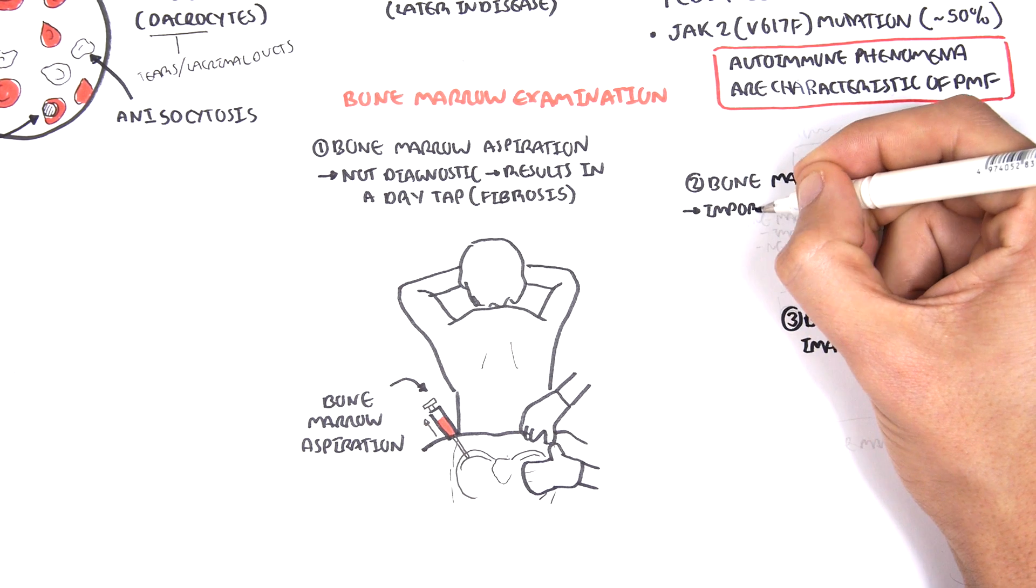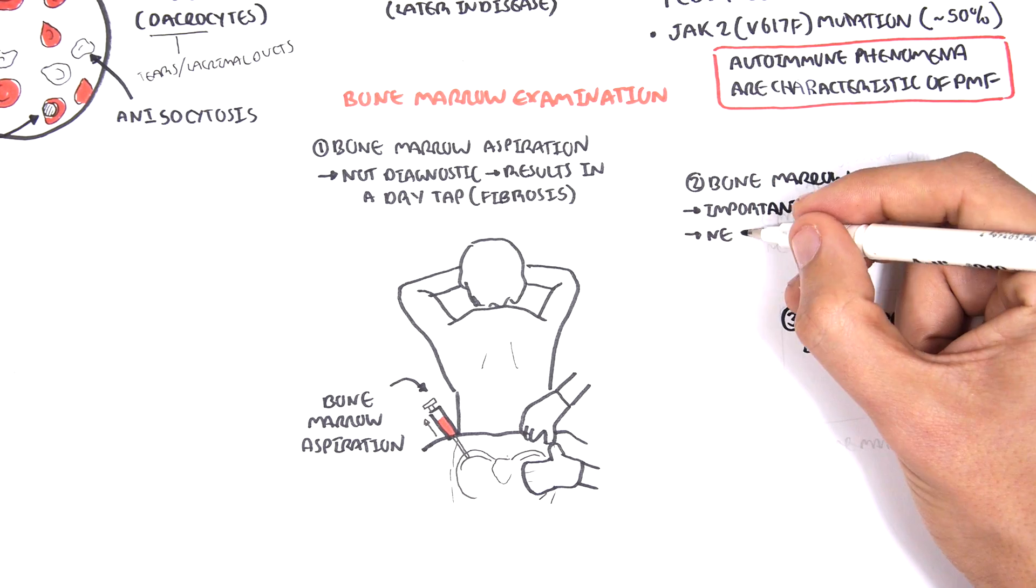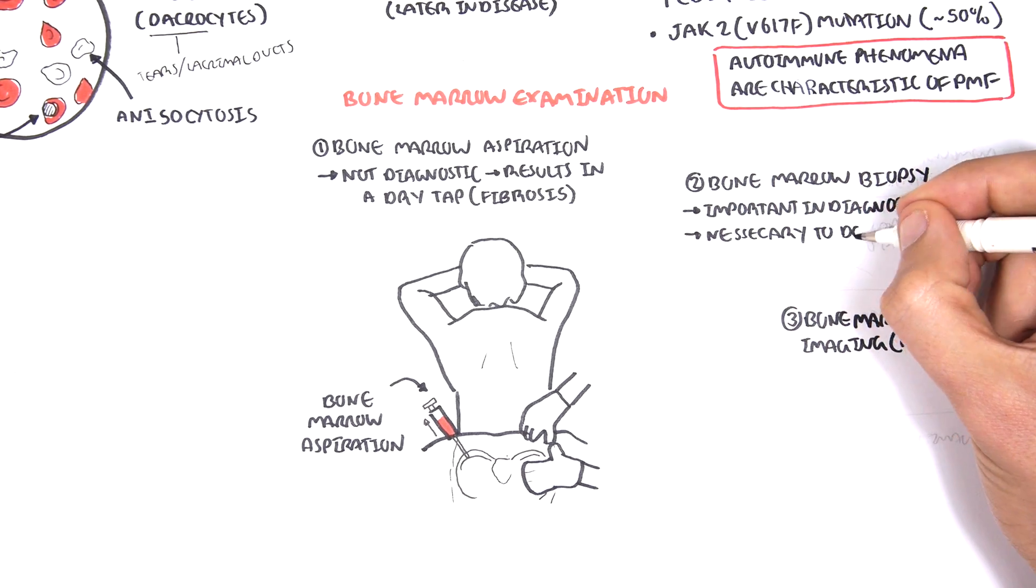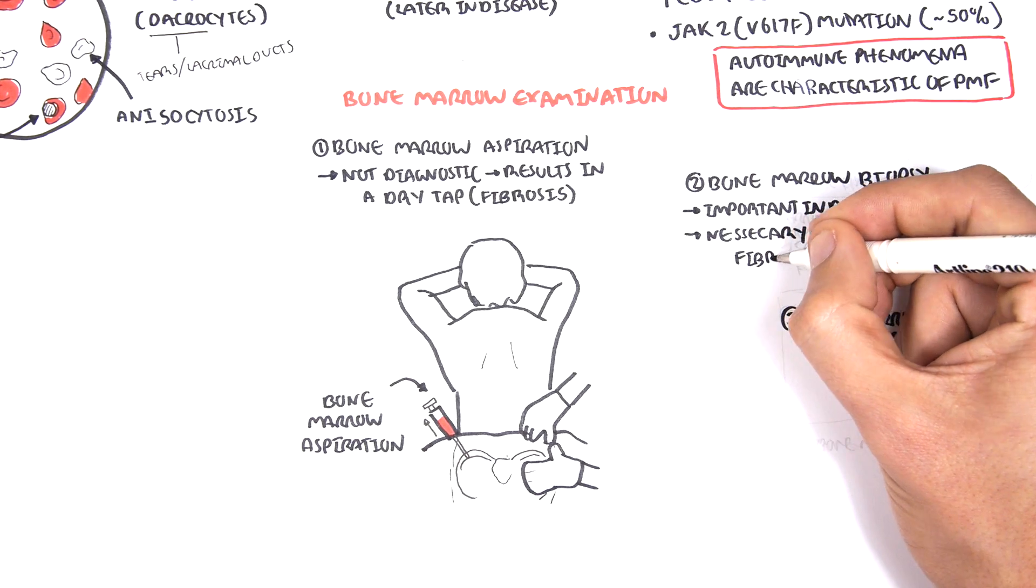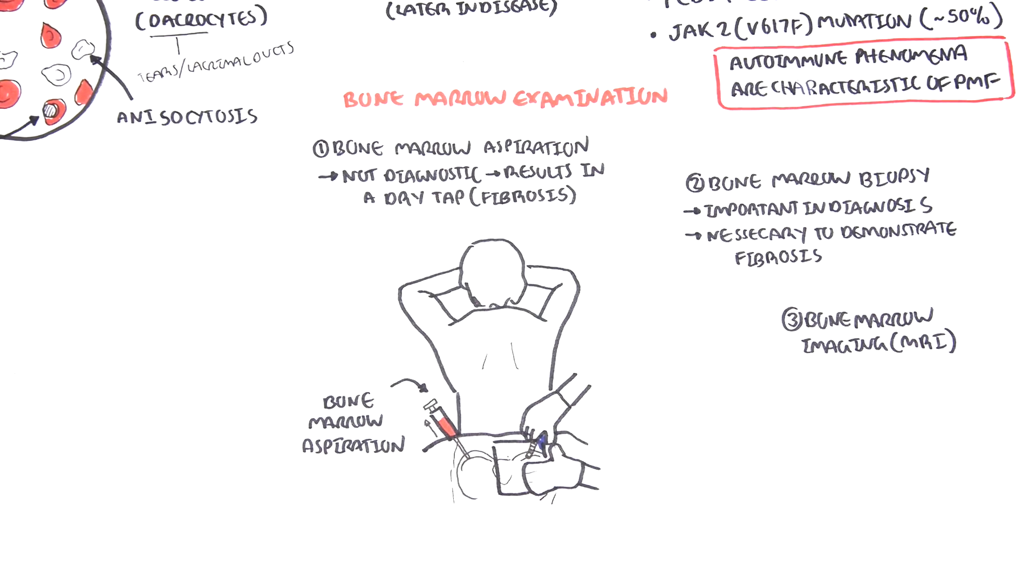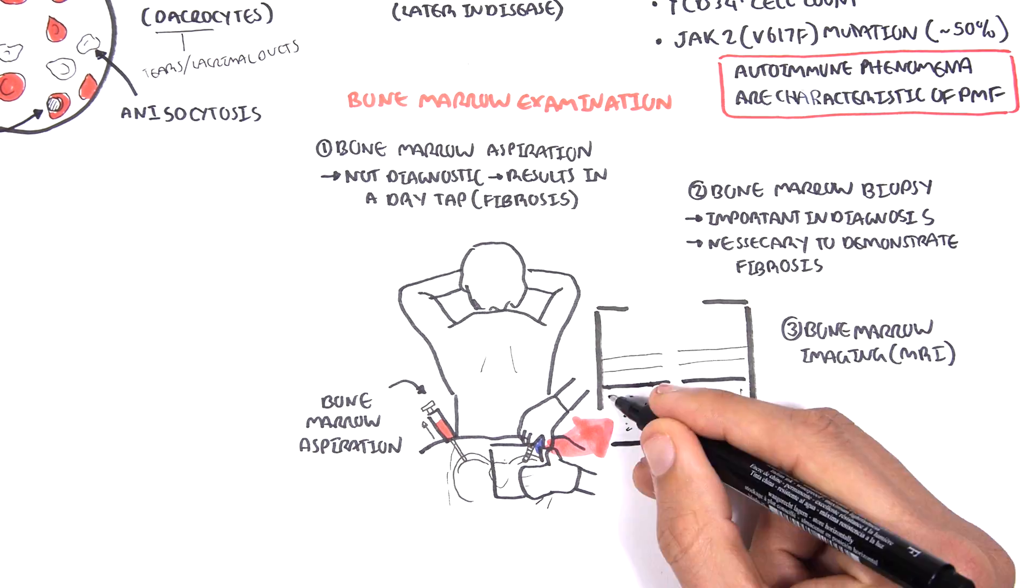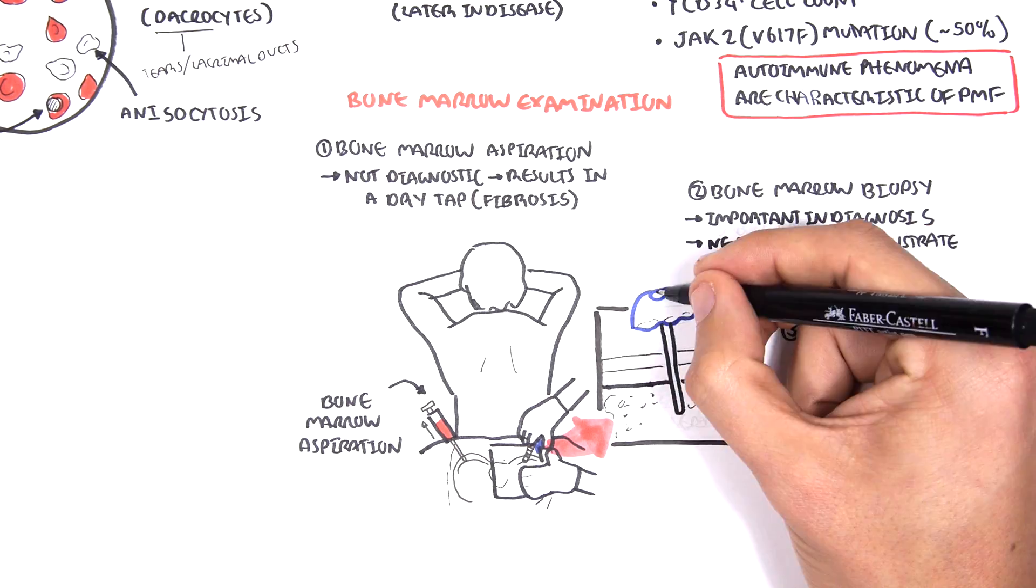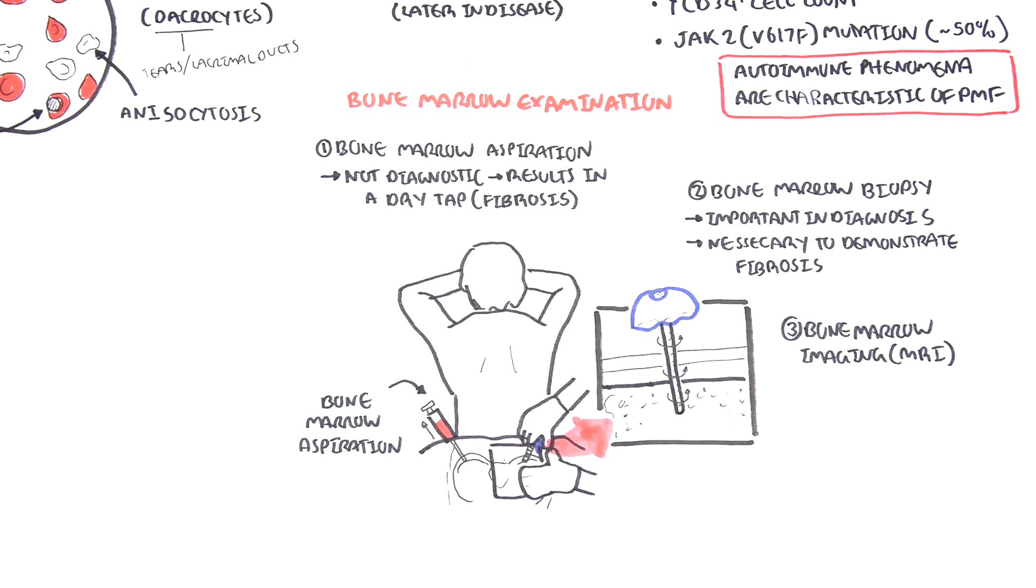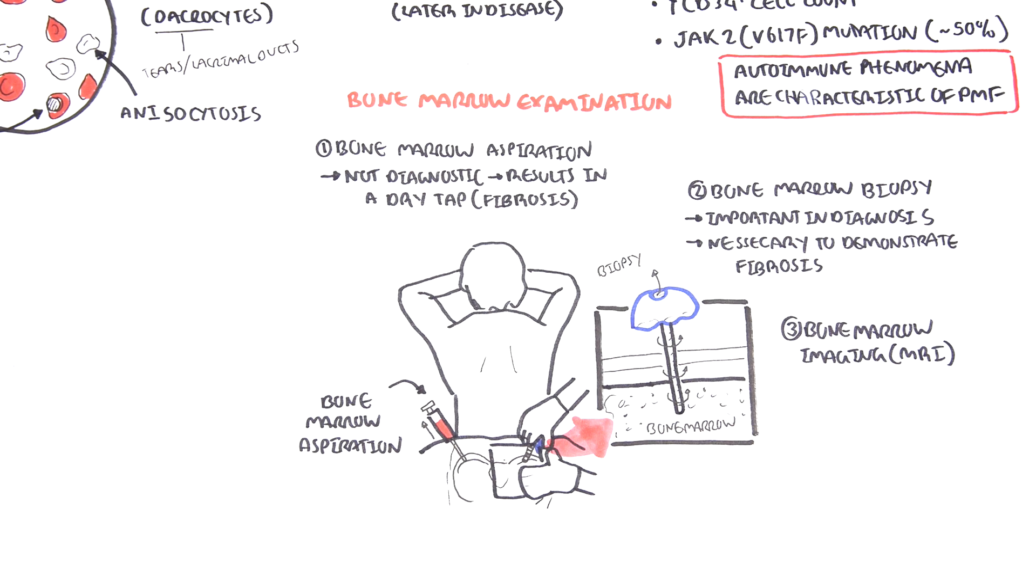Bone marrow biopsy, on the other hand, helps in diagnosing myelofibrosis. The bone marrow biopsy is necessary to demonstrate fibrosis. Here is a biopsy needle which is being drilled into, through the bone, and into the bone marrow. It is then used to obtain bone marrow tissue for histological examination.